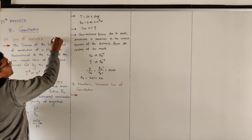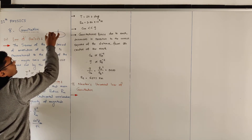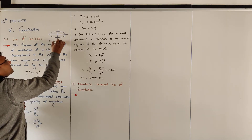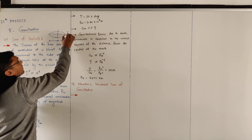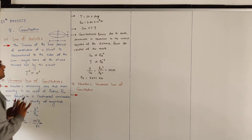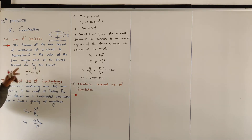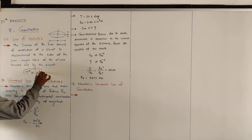Semi-major axis — we draw a diagram of the elliptical orbit. We call the full major axis 2a and the full minor axis 2b. So the time period squared is proportional to the cube of the semi-major axis of the ellipse traced out by the planet. Here T² is proportional to a³. Remember this relation.